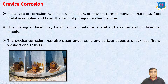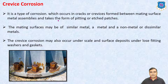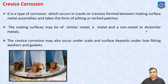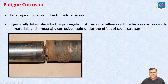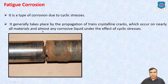Crevice Corrosion is a type of corrosion which occurs in cracks or crevices formed between matching surface metal assemblies and takes the form of pitting or etched patches. The mating surfaces may be of similar metal, a metal and a non-metal, or dissimilar metals. Crevice corrosion may also occur under scale and surface deposits, under loose fitting washers and gaskets. Fatigue Corrosion is a type of corrosion due to cyclic stresses. It generally takes place by the propagation of transcrystalline cracks which occurs on nearly all materials and almost any corrosion liquid under the effect of cyclic stresses.